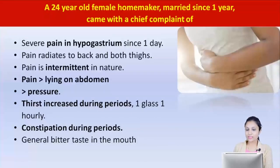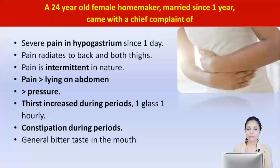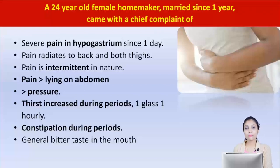Going back to the case, this is the case of a 24-year-old female homemaker, married since one year, who came with a complaint of severe pain in the hypogastrium since one day. Hypogastrium is the lower abdomen. The pain radiates to the back and both thighs. Pain is intermittent in nature, better by lying on the abdomen, better by pressure.